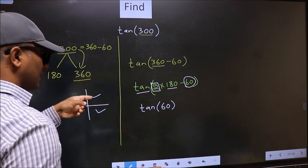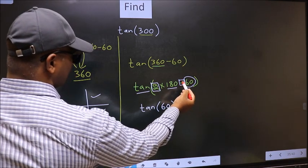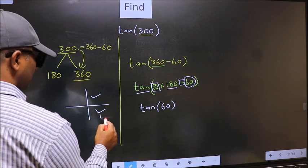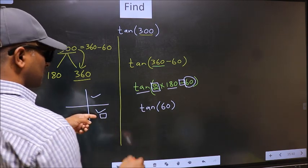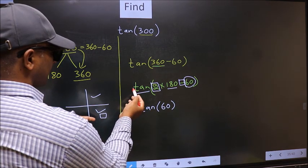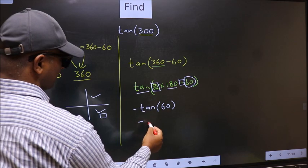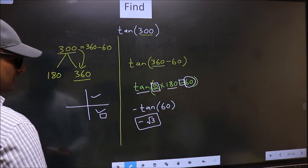So now to select the quadrant, we should look at this symbol. Here we have negative, that means the angle lies in the fourth quadrant. And in the fourth quadrant, tan is negative, so we should put negative. So negative tan(60) is root 3. This is our answer.